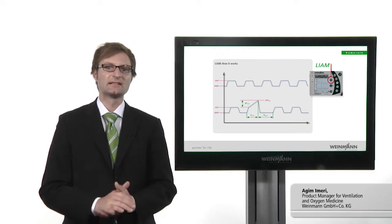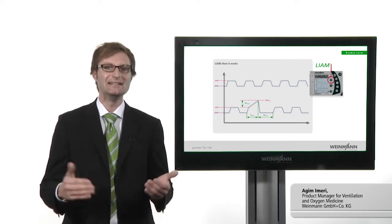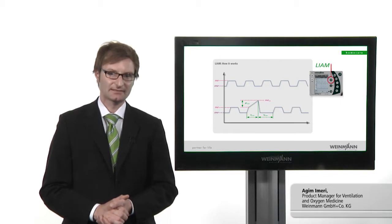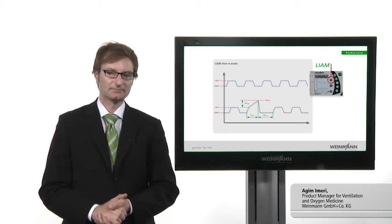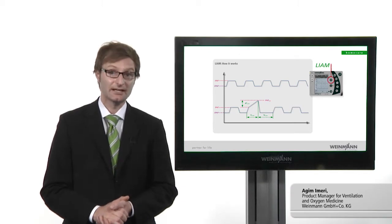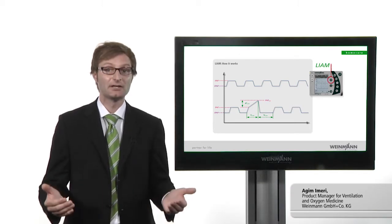During inspiration, an extra pressure, LIAM Delta P, is added to the previously set IPAP. Inspiratory pressure of 20HPA and a LIAM Delta P of 10HPA results in a maximum pressure of 30HPA.